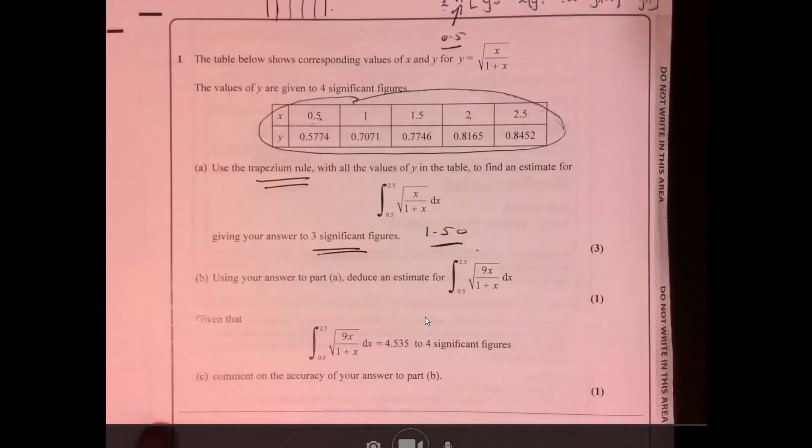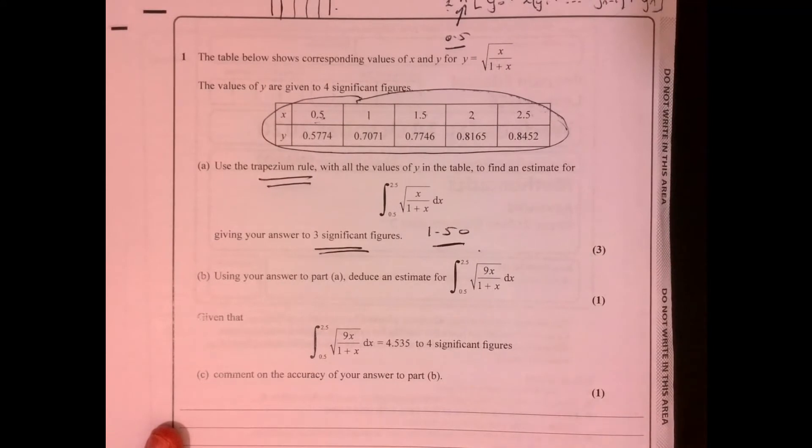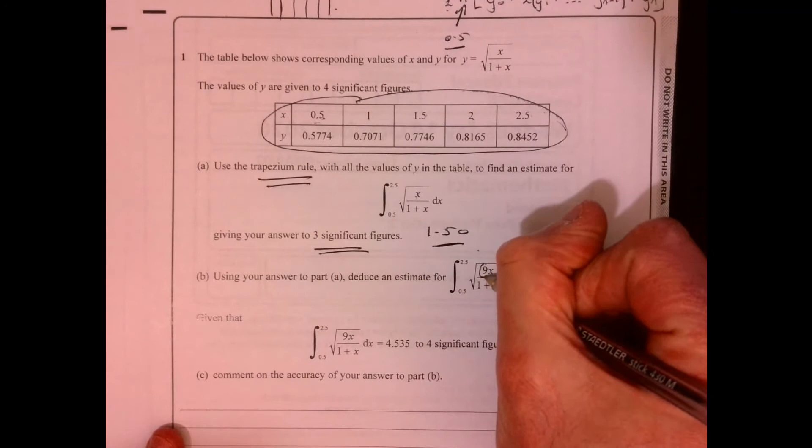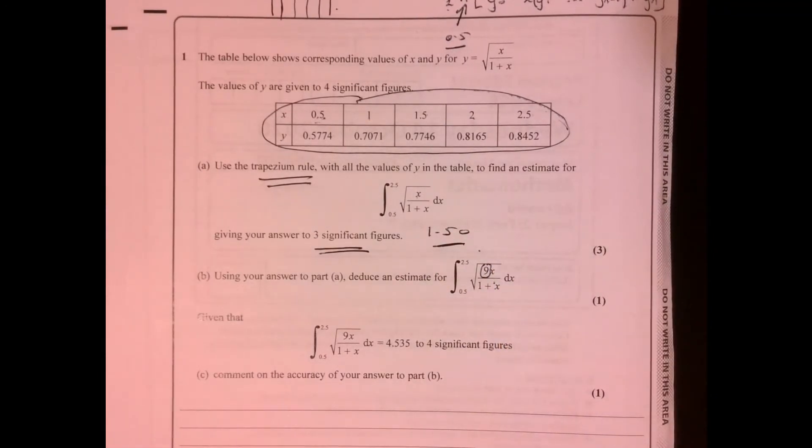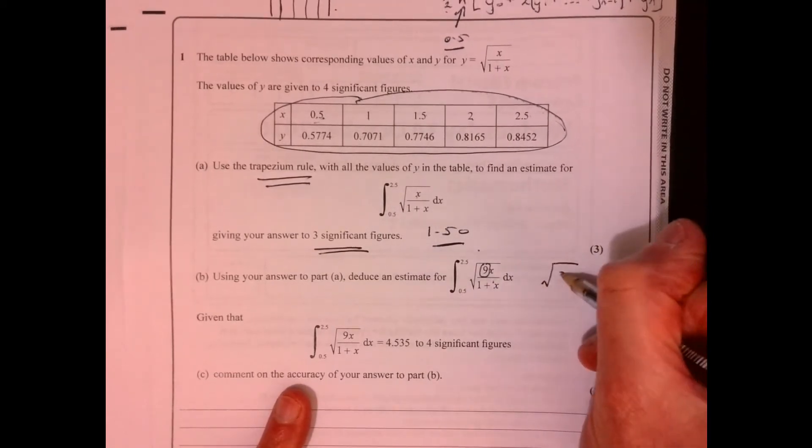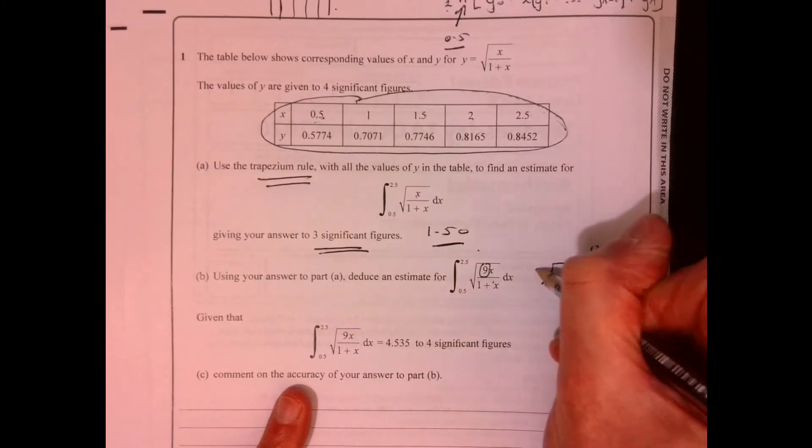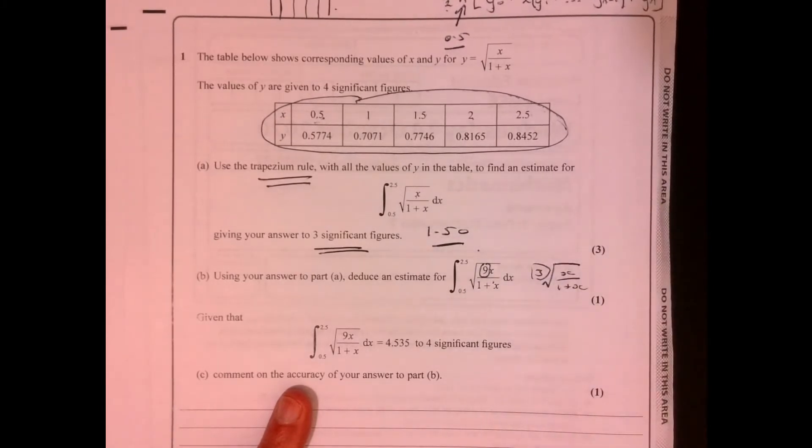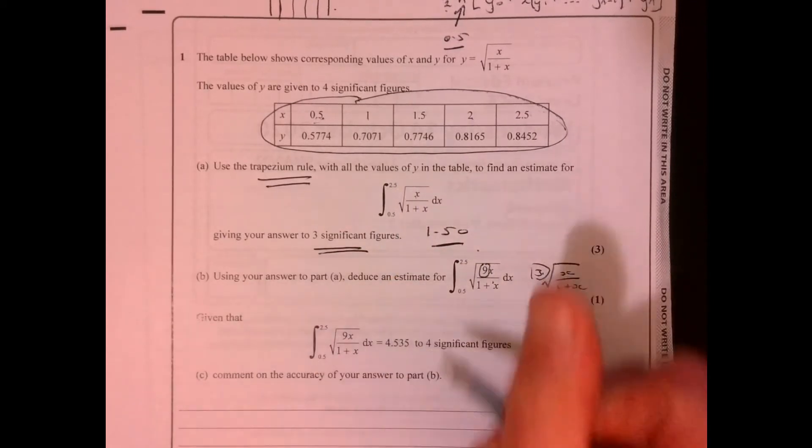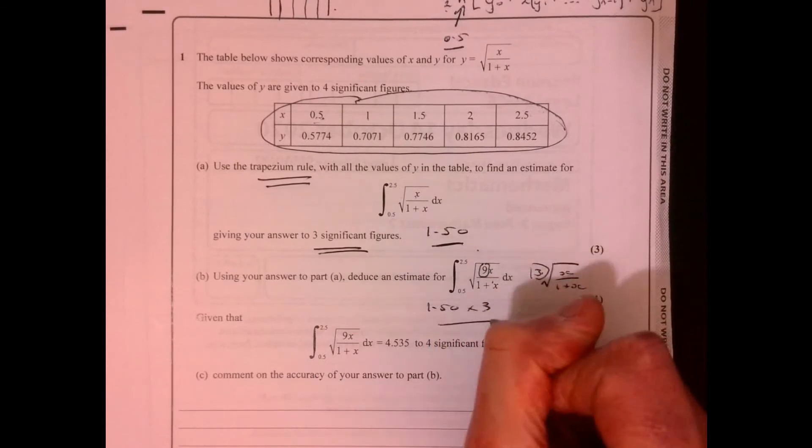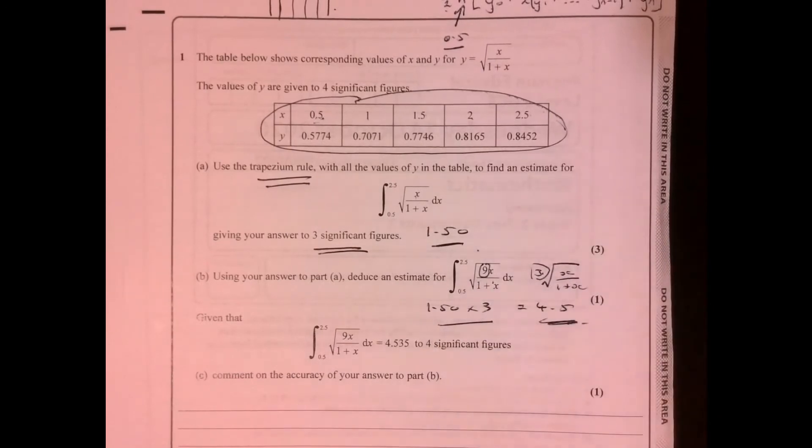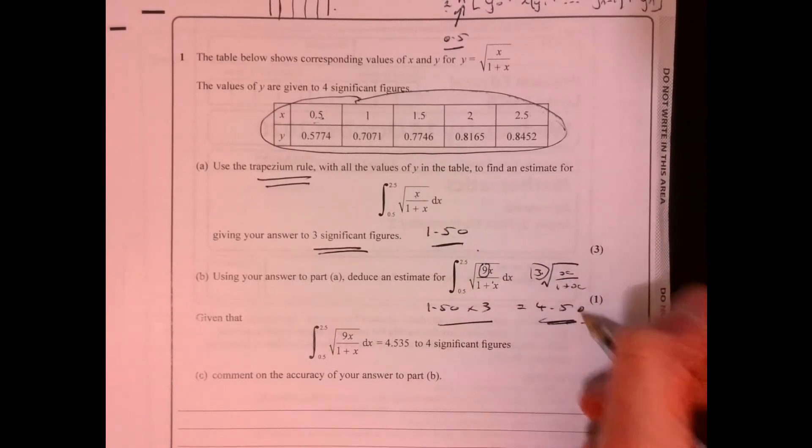When you got onto part B, what's the difference there? What's the difference between this and this? Well, the difference is this little 9 just here. So the square root of 9 is 3, isn't it? So if we want to take that 9 outside, just think about really what the difference is. So this is going to be 3 times this. So the answer here would just be to multiply our previous estimate by 3. So obviously that's 4.5, 4.50 there to be correct.